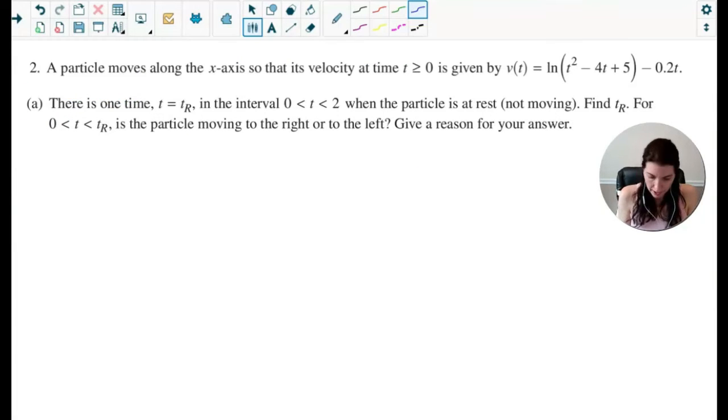So here we would say t sub R is, again, that 1.426 value. And then again, that occurs when v(t) is equal to zero at that time value.